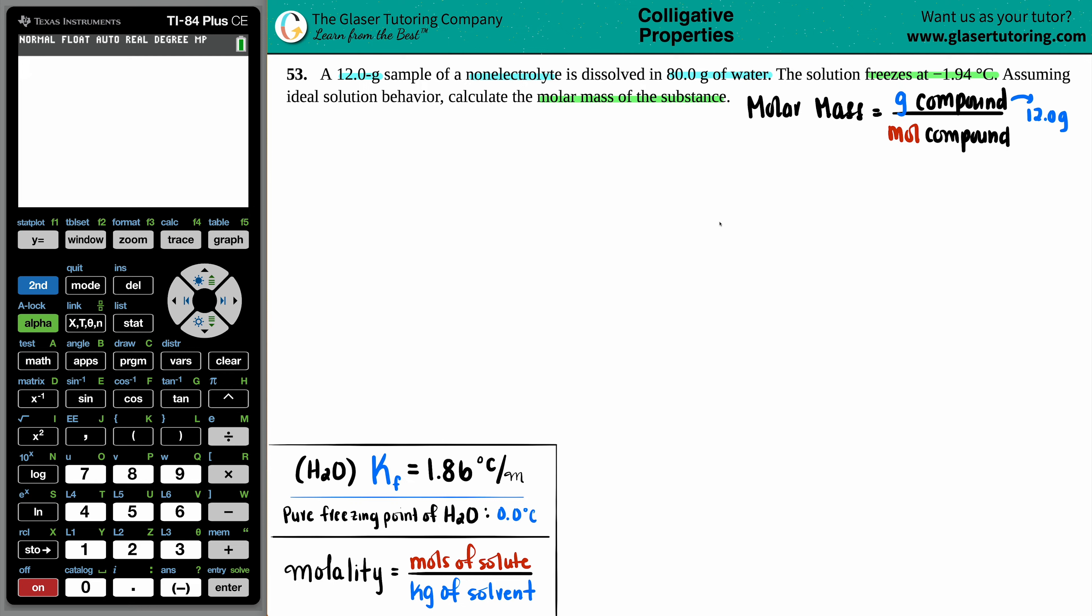The solute is always the small amount of solid, generally, that is being dissolved or dunked into the solvent. Now, in this case, we have 12 grams of the substance being dunked in or dissolved in the water. So by these wordings, the 12 grams of the non-electrolyte has to be the solute and the water has to be the solvent. And together, they make up that one happy solution.